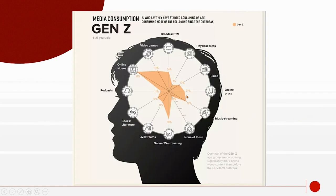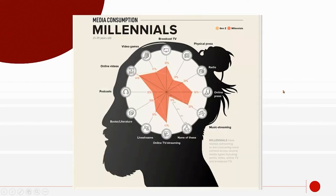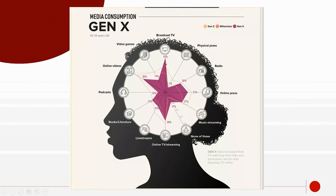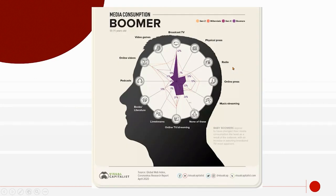For Gen Z, there's not much broadcast TV — no physical press, but lots of online video. It changes even between Gen Z and millennials. Generation X watches a lot more traditional TV. Boomers are extremely different from all the others — a lot of broadcast TV, still some online press, but mainly broadcast TV. So that is the end of this chapter. Hope you enjoyed it, and I will see you next time.